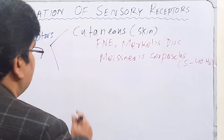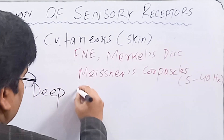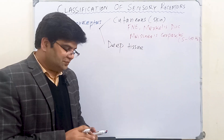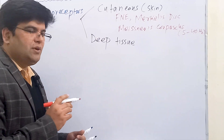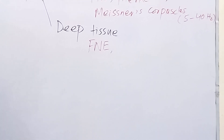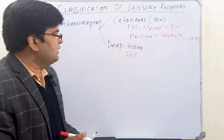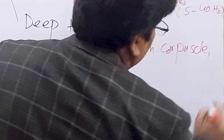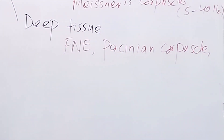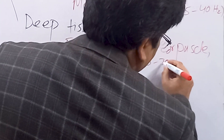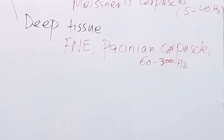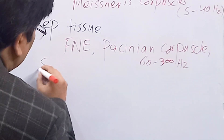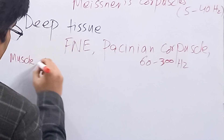Now let's talk about receptors present in deeper tissues — we call them deep tissue mechanoreceptors. Examples of these receptors located in deeper tissues are free nerve endings present in the ligaments and fascias. A very important encapsulated receptor, the Pacinian corpuscle, is also located in the subdermis and is important for detecting deep pressure and high frequency vibrations ranging from 60 to 300 Hz.